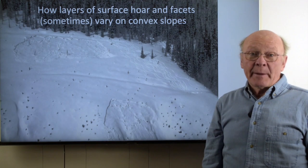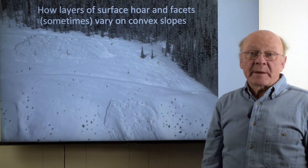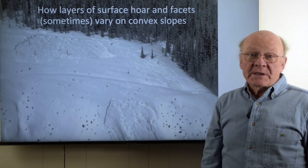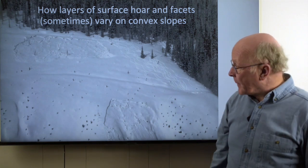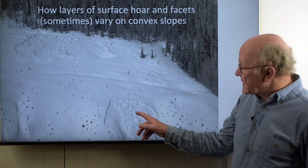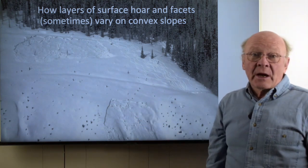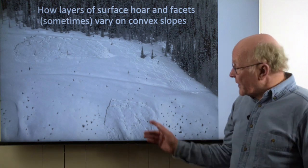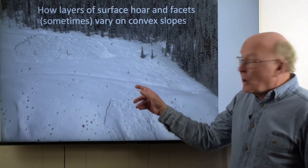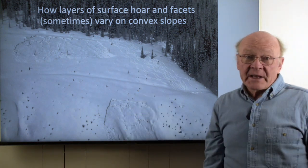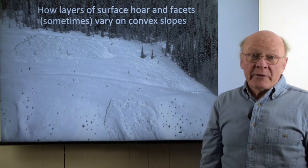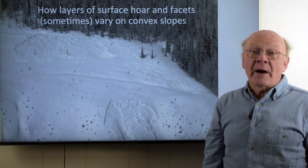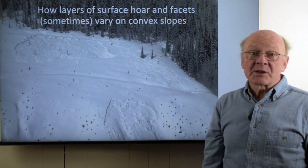Many of the slab avalanches that catch and sometimes kill people in the backcountry release on persistent weak layers under a slab. This dry slab avalanche released on a layer of surface hoar. Notice that it released on the steeper slope below the convexity. Let's look at how the formation of two types of persistent weak layers often vary on convex slopes.